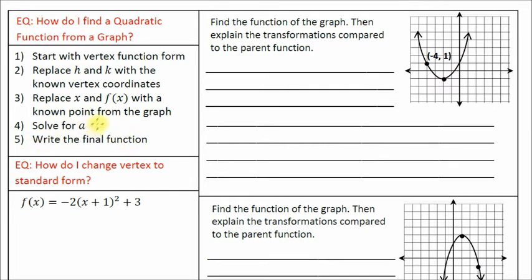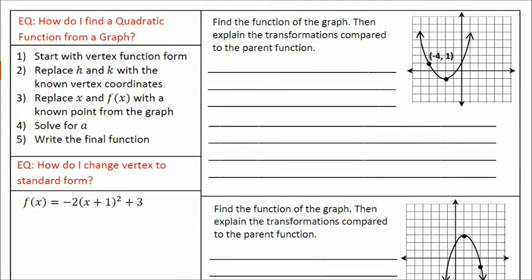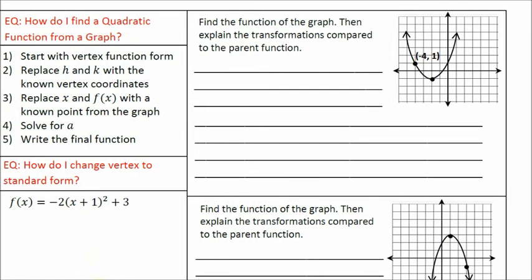Notice we're doing the same thing we did before — we have to find the value of a. The difference is now we're going to be plugging in an h and a k value, whereas before those were 0 when the vertex was at the origin. Also remember: f of x is equal to y. So when it says replace x and f of x, it's basically just saying replace x and y. F of x is just the y value of the coordinates on the graph.